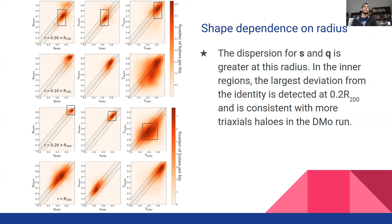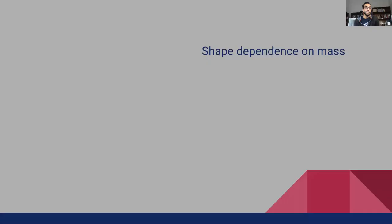But in the inner region, the larger deviation from identity is detected at the 20% of the virial radius. This is important because the region that maximizes the effects of the shape change is shifted with respect to the most inner regions, where halos typically contract more.